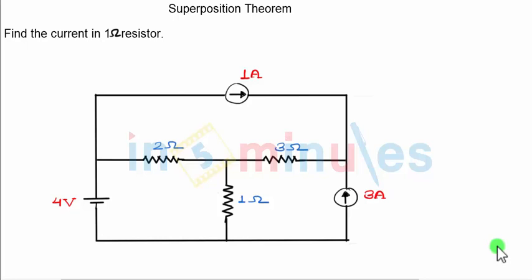You are given one circuit diagram with three sources: four volts voltage source, and two current sources of one ampere and three ampere. The question is find the current in one ohm resistance. This is one ohm resistance through which we have to find out the current.